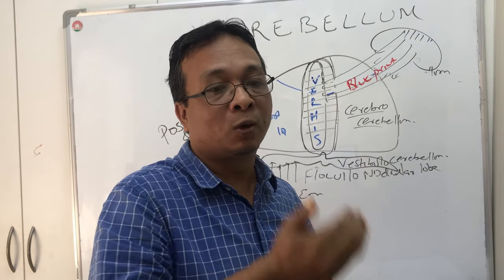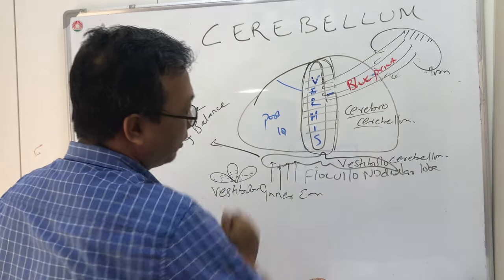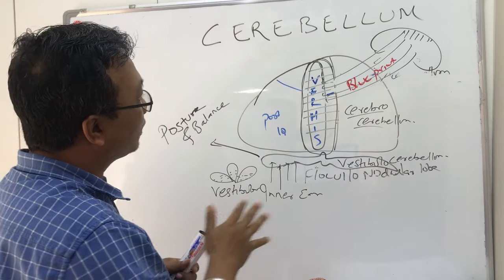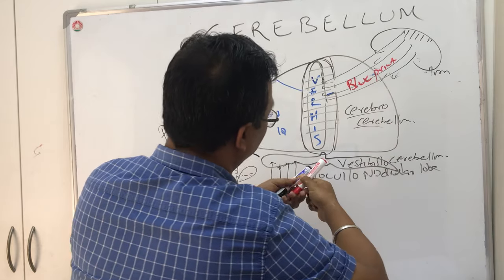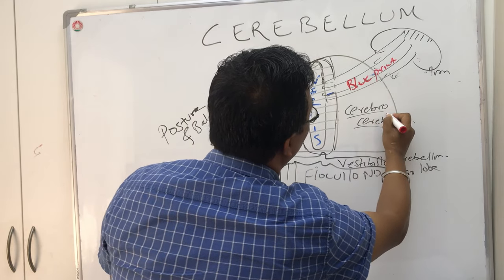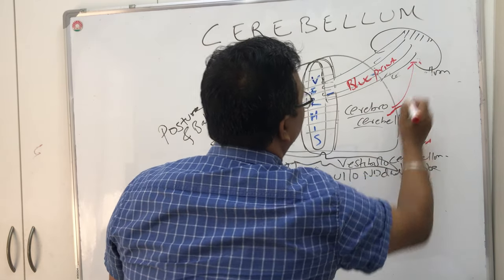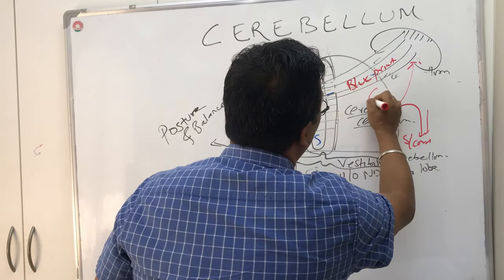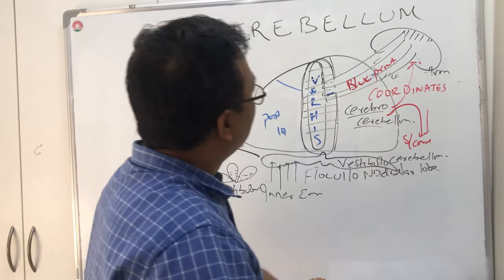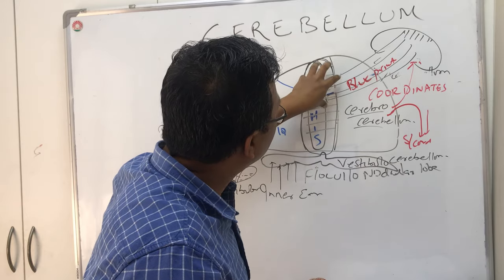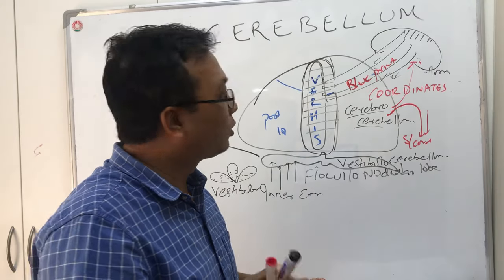The cerebellum must know what the cerebral cortex is going to do next. It receives the whole blueprint, and as a result it coordinates the movement. Together with this loop, the spinocerebellum and cerebrocerebellum coordinate the movement.